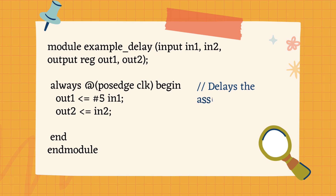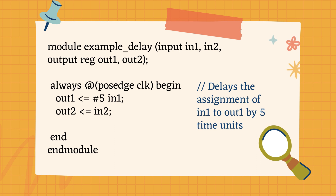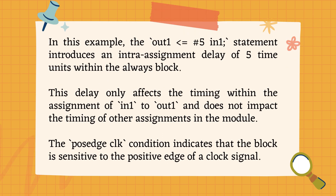We will understand this with an example. In this module, always at the positive edge of clock, begin: out1 = #5 in1; out2 = in2. Here we are assigning in1 to out1, but delaying the assignment by 5 time units. So we are using intra assignment delay. The statement out1 = #5 in1 introduces an intra assignment delay of 5 time units within the always block.